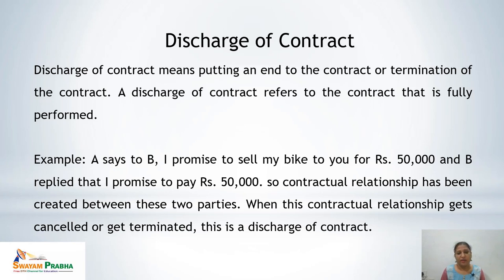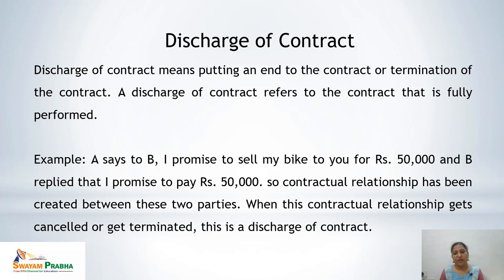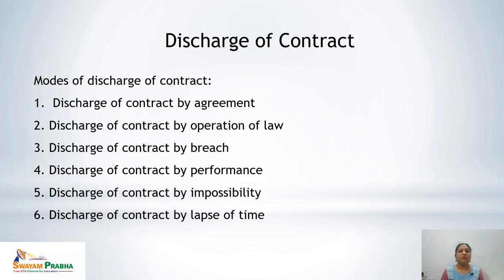A discharge of contract refers to the contract that is fully performed, meaning both parties have performed, or the contract has come to an end due to some legal consequences, making it null. For example, A says to B: 'I promise to sell my bike to you for rupees 50,000,' and B replies: 'I promise to pay rupees 50,000.' When this contractual relationship gets cancelled or terminated, we call it a discharge of contract.